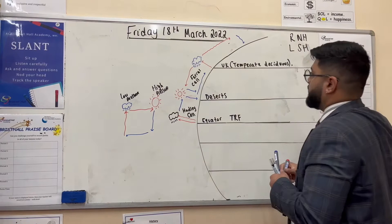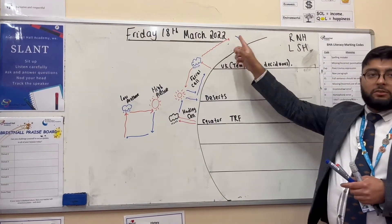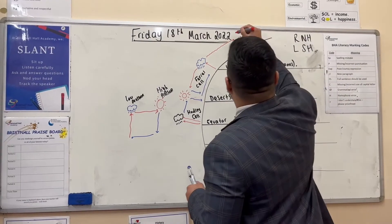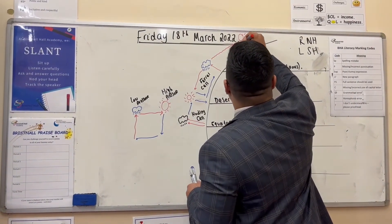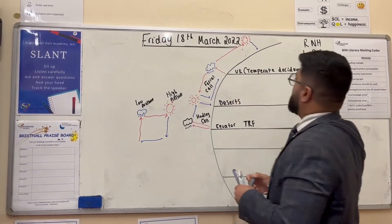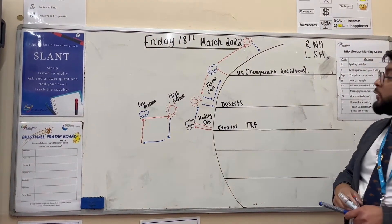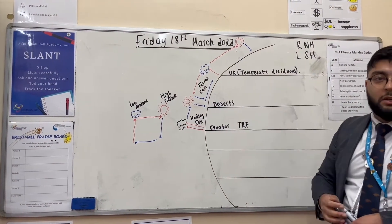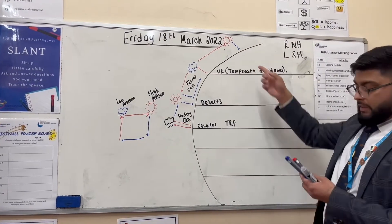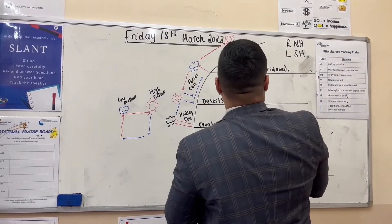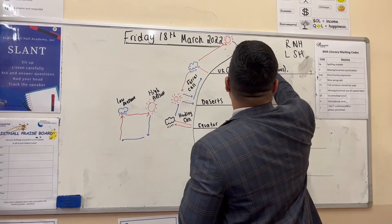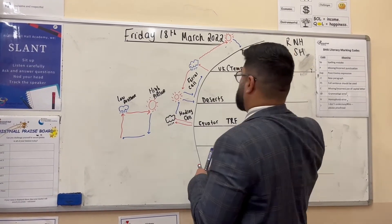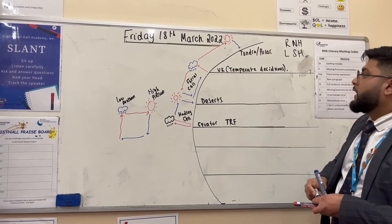Finally, the last cell is called the polar cell. Here the air is sinking, which leads to high pressure and no clouds. That leads to sunny but also very dry conditions — sunny in the summer but very dry. This biome is generally the tundra or polar biome, where we get very little precipitation, less than 250 millimeters a year, but it can be quite sunny in the summer.